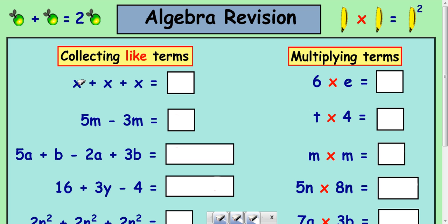So if you look at this first example, we've got x plus x plus x. And when adding terms together, we just collect them up and work out how many you've got.